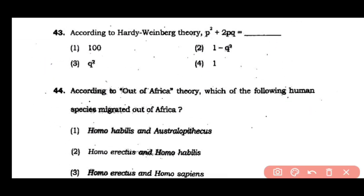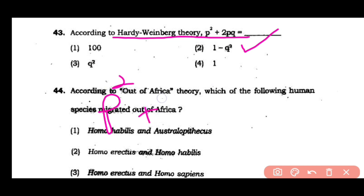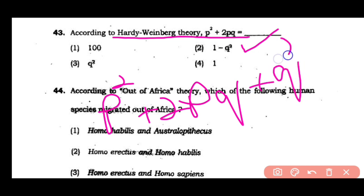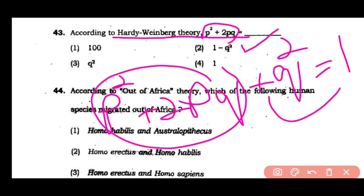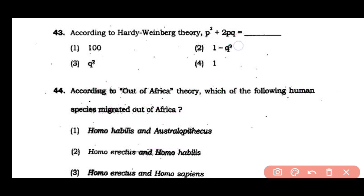Question number 43: According to Hardy-Weinberg theory, P² + 2PQ = 1 − Q². The correct answer is option 2 — we know the Hardy-Weinberg formula is P² + 2PQ + Q² = 1, so P² + 2PQ equals 1 − Q², making option 2 correct.